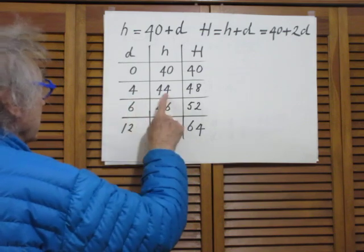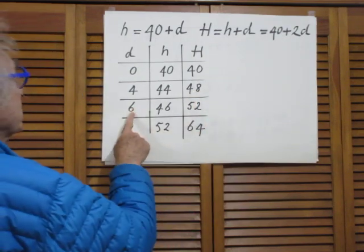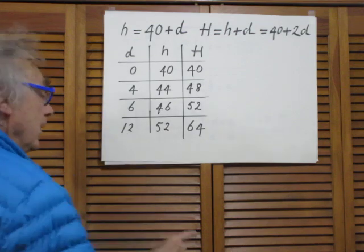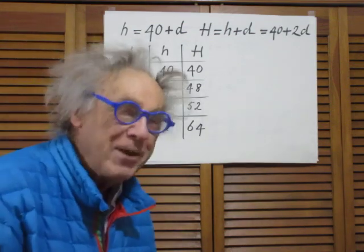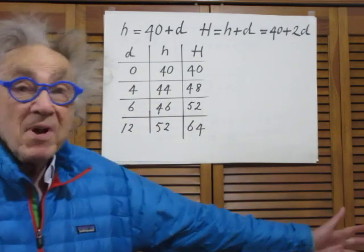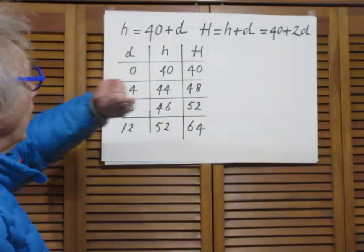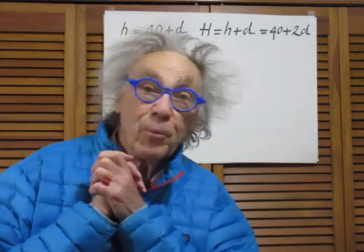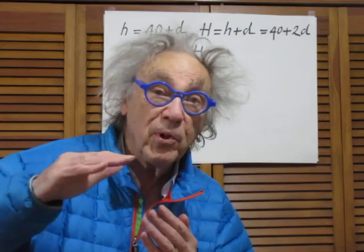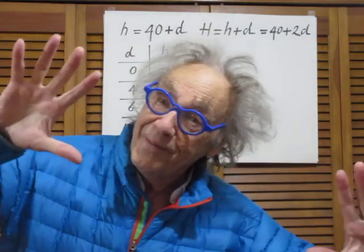That was our original problem. If you make d equal to 6, h becomes 46 and capital H becomes 52. If you make d as large as 12 — there may be restrictions since you could damage the spring, but setting that aside — small h becomes 52 and capital H becomes 64. So it is not at all a coincidence that small h equals 40 plus d, and whenever you increase d, little h will increase by exactly the same amount.